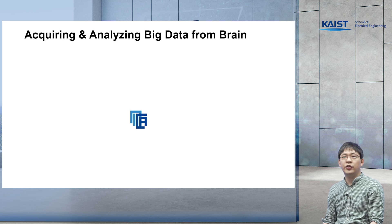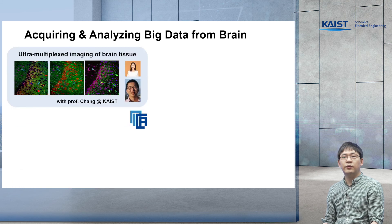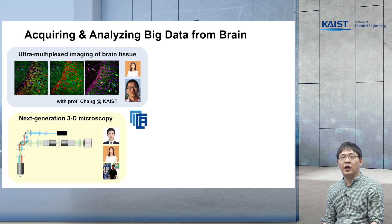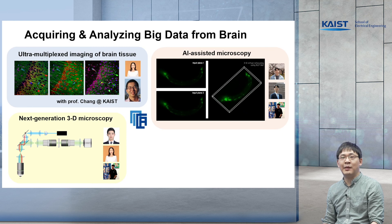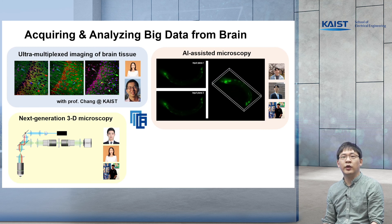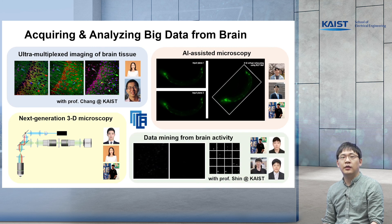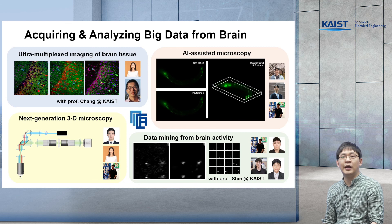So far I have introduced one method for acquiring big data from the brain and one method for analyzing big data from the brain. I would like to briefly introduce other research topics we are working on. With Professor Zhang, we are developing an ultra-multiplexed imaging method which allows us to image more than 15 proteins in a single round of imaging. We are working on next-generation 3D microscopy for high-speed brain activity imaging. We are also developing an AI-assisted microscopy method — in one example, we took only two images of a tiny worm called C. elegans, and a network reconstructed the entire volume from just those two images. Lastly, with Professor Zhang, we are implementing a pipeline to do data mining from brain activity to find the underlying patterns.